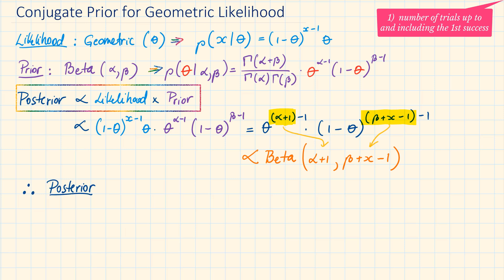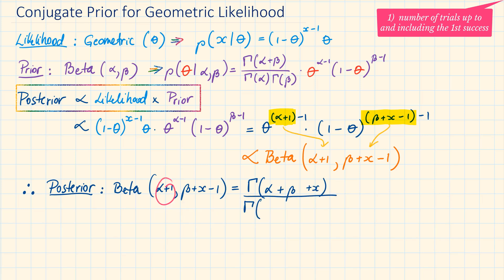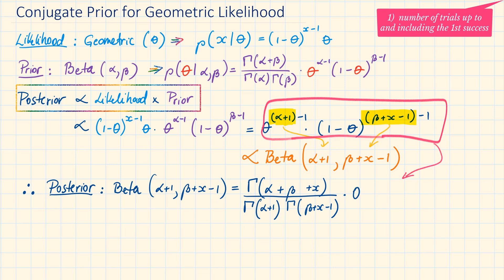Replacing these parameters into a beta distribution gives us the complete posterior distribution. So now we know that the beta is a conjugate prior to the geometric distribution for Scenario 1.